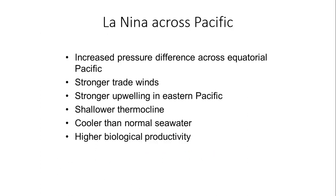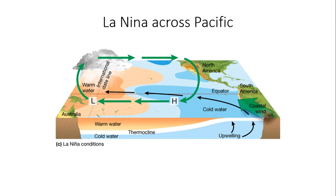La Niña is the opposite of El Niño. This takes place when you get increased pressure differences across the equatorial Pacific, stronger trade winds during La Niña episodes, stronger upwelling of the Eastern Pacific Ocean, shallower thermoclines, and cooler than normal seawater with higher biological productivity. The Peruvian fishing industry benefits when you have La Niña conditions, unlike during El Niño.